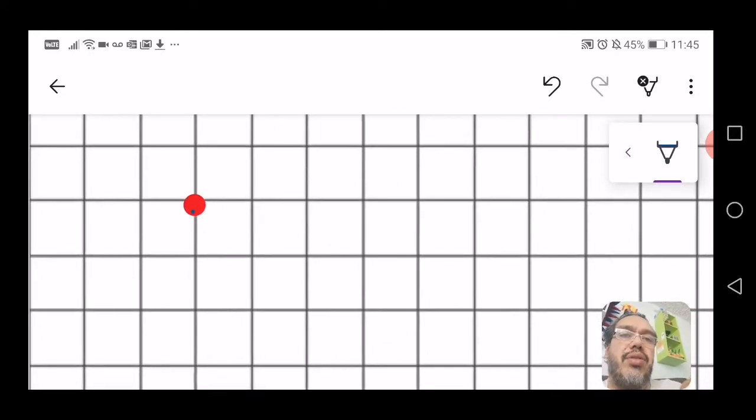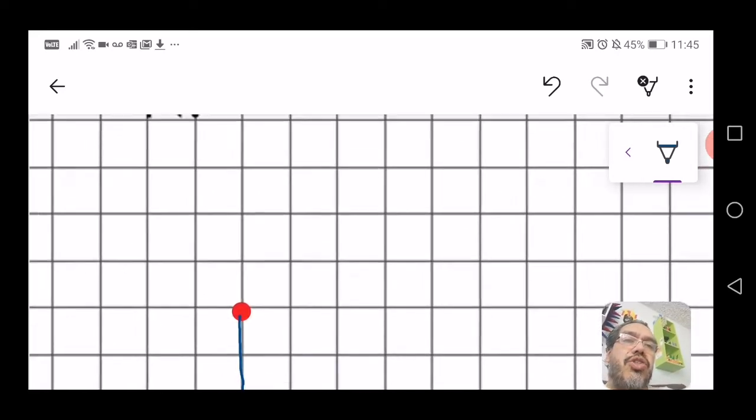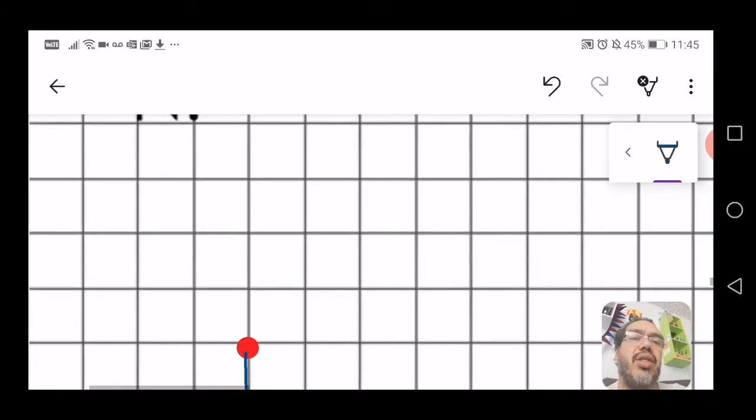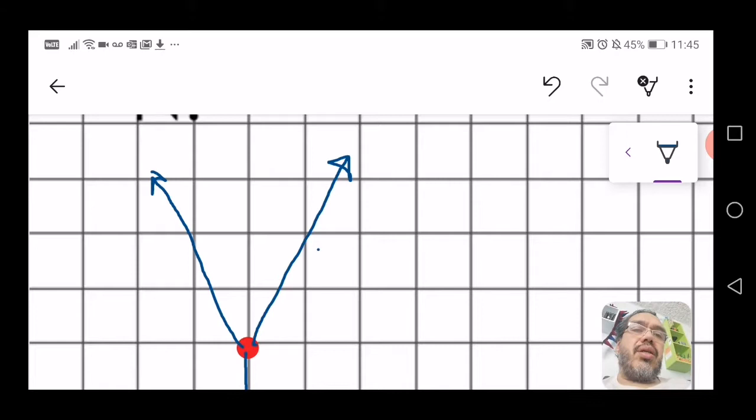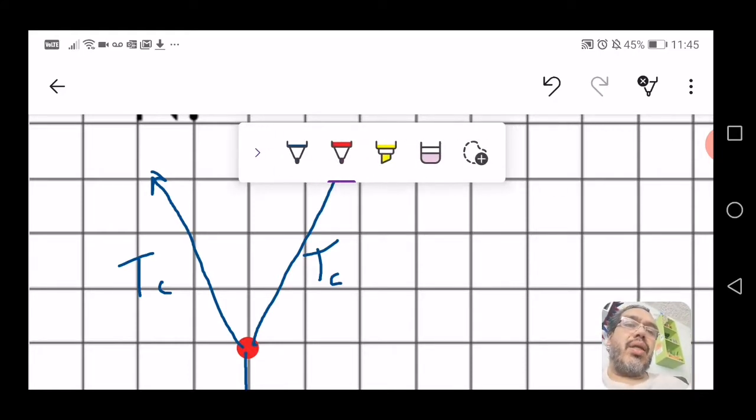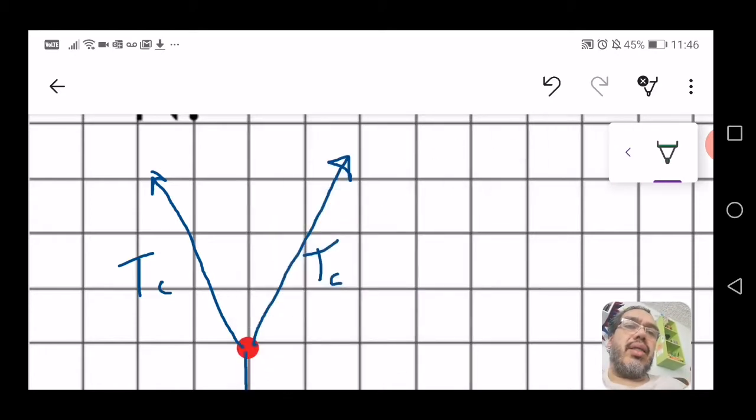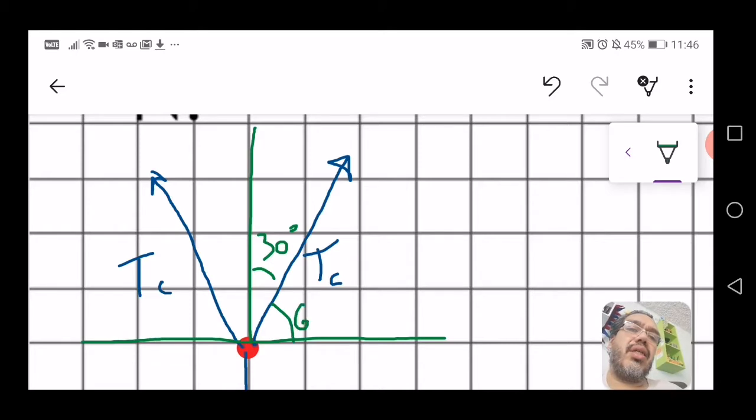It says that the weight is 476 N. And there are two strings, each of them at 60 degrees to each other, symmetrically upward to each side. Now, because of the symmetry, we can safely assume that the tension is the same on both of them. If that is so, then it will become very clear that the angle with the vertical is 30 degrees, because the whole angle is 60. And so, the angle with the x axis is 60 degrees.